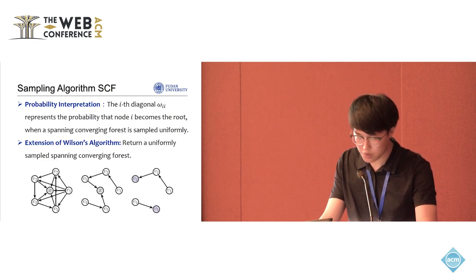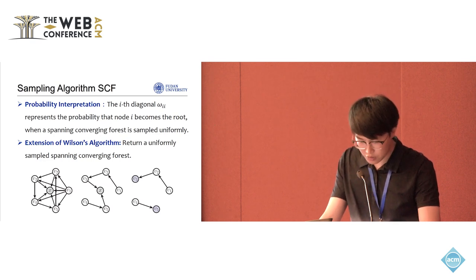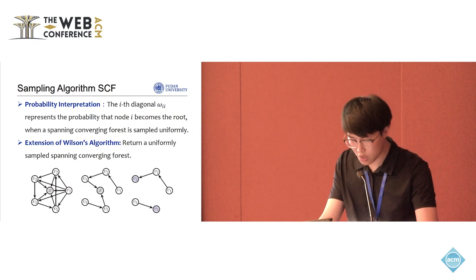The middle diagram shows the rooted spanning tree rooted at x, generated using Wilson's algorithm. Finally, by removing x and its associated edges, we obtain the spanning converging forest shown on the right.